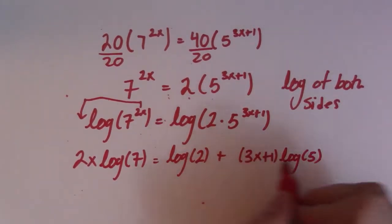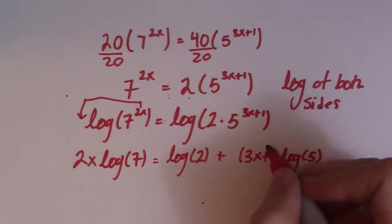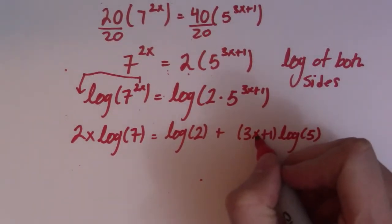So note, I was going to write this as log 5, 3x plus 1, but I decided just to skip that step and put it out front. It saves me a little bit of work.